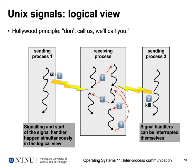The signal model follows the Hollywood principle: 'Don't call us, we'll call you.' The receiving process doesn't poll the OS for signals — the OS delivers them. When a sending process executes the kill system call with the target process ID and signal number, the receiving process executes its signal handler the next time it is scheduled.